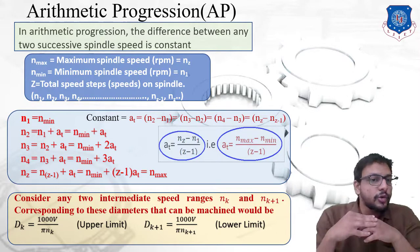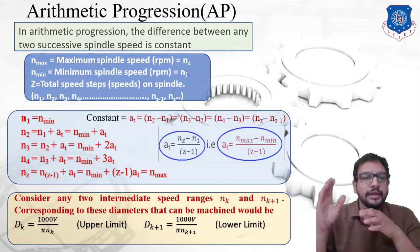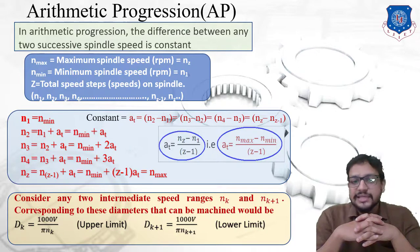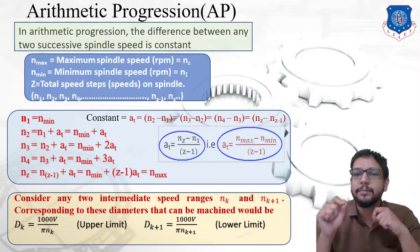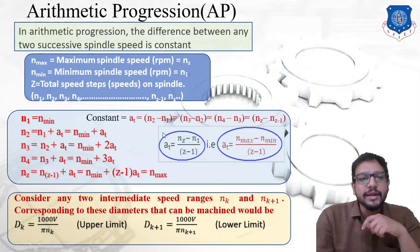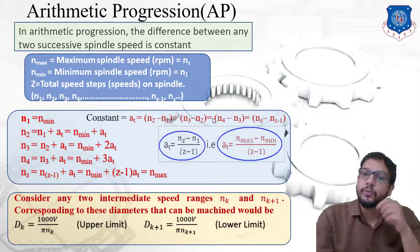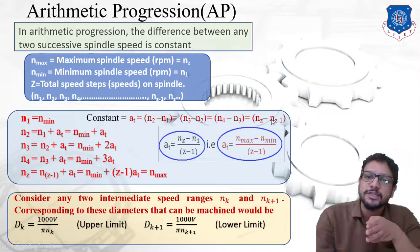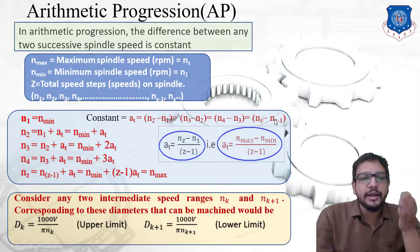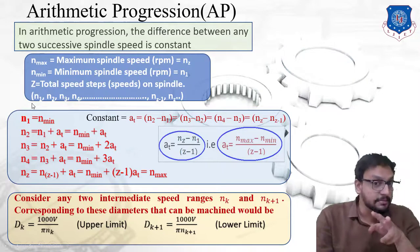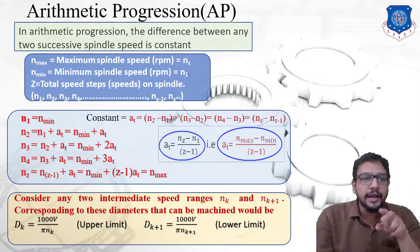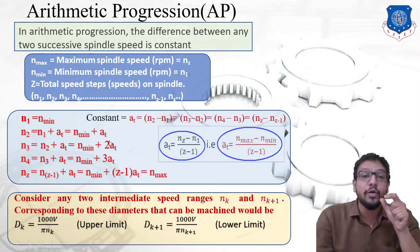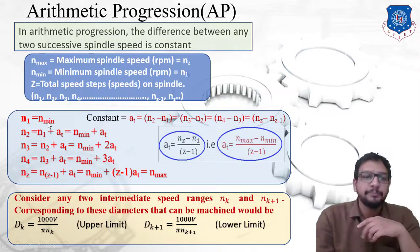The speeds are n1, n2, n3, n4 up to nz, where nz is the maximum spindle speed. The constant difference between two successive spindle speeds is denoted by 'at', so: at = n2 − n1 = n3 − n2 = n4 − n3 = nz − n(z−1). In a numerical problem, you are given minimum and maximum speed and must determine the intermediate speeds n2, n3, n4, etc., as well as the constant 'at'.